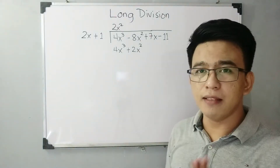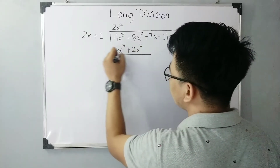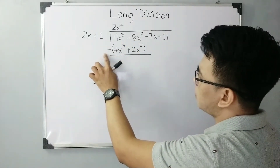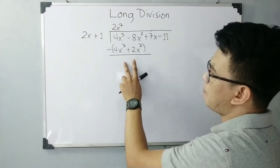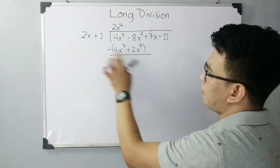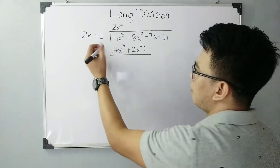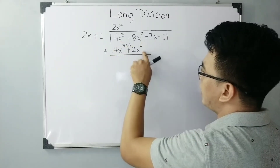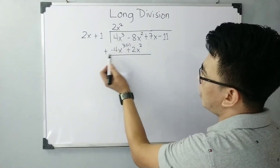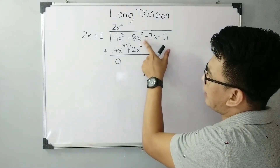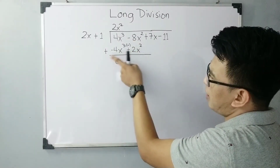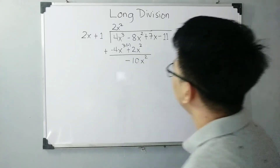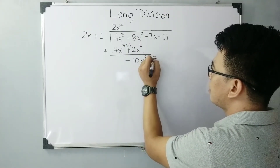Now, same process as we do in basic division — we need to subtract this. Notice that we placed a subtraction symbol, so all the signs of these two terms will change: from positive to negative. So it will become negative 4x cubed and negative 2x squared. So, 4x cubed plus negative 4x cubed is 0. And negative 8x squared plus negative 2x squared gives negative 10x squared. Bring down plus 7x.